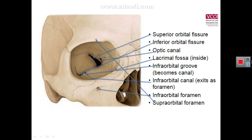We will now describe another special region, which is the orbit. The orbit is a cavity which is a four-sided pyramid. Its base is anterior, formed by the margins of the orbit, and its apex is posterior.